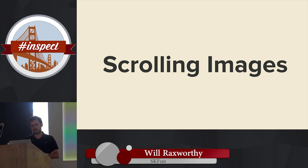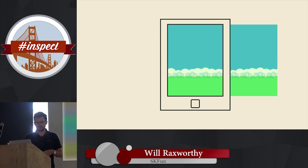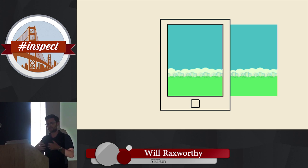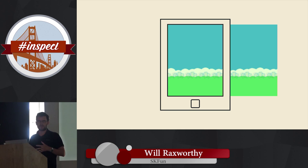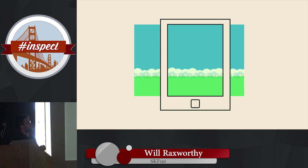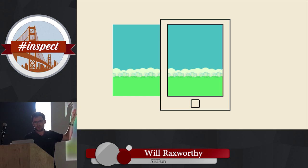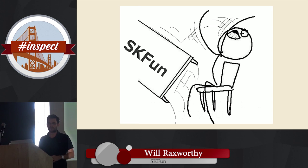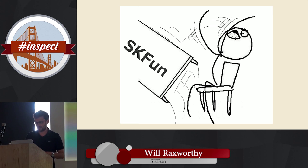Actions are also really useful for scrolling images and parallax effects. The most common solution is two images placed next to each other — low node count means high frame rates, and you don't have to keep drawing the same image. As the game progresses, the images scroll. When the left one goes off screen, remove it and move it back to its starting position to restart the scroll. Without actions this was messy — with actions it became much easier.